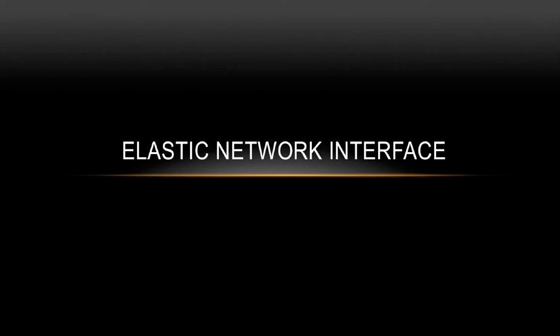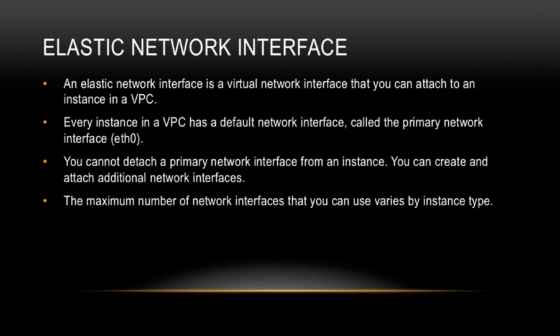Welcome back. In this lecture we'll talk about an interesting topic called elastic network interface. An elastic network interface is a virtual network interface that we can attach to an instance in a VPC. Every instance that we launch in a VPC has a default network interface, also known as the primary network interface, and this is denoted by eth0.